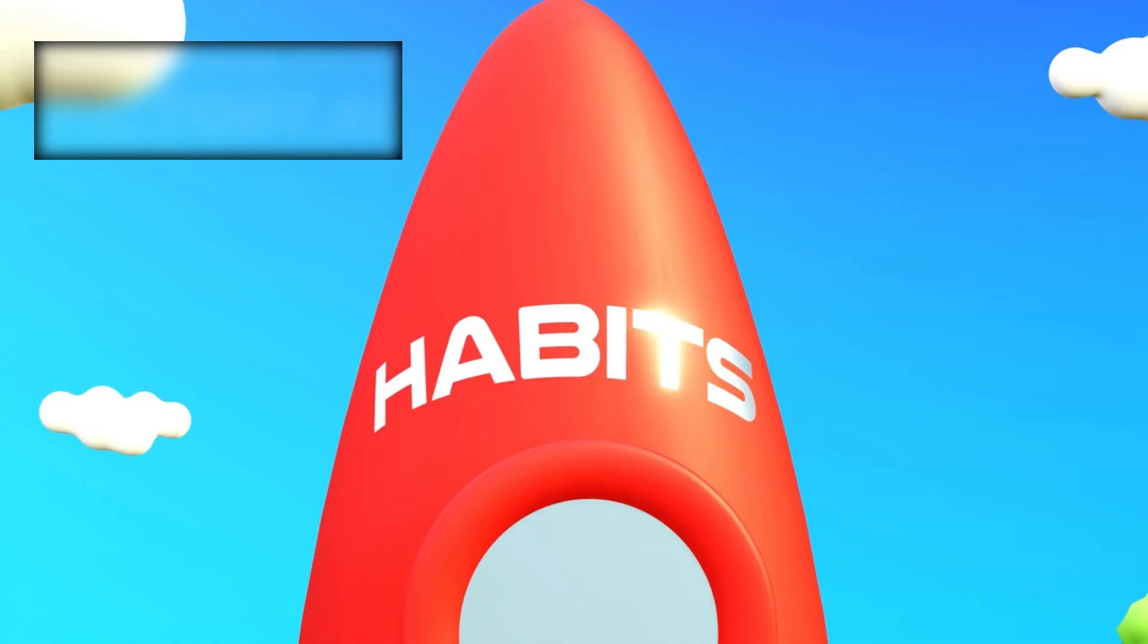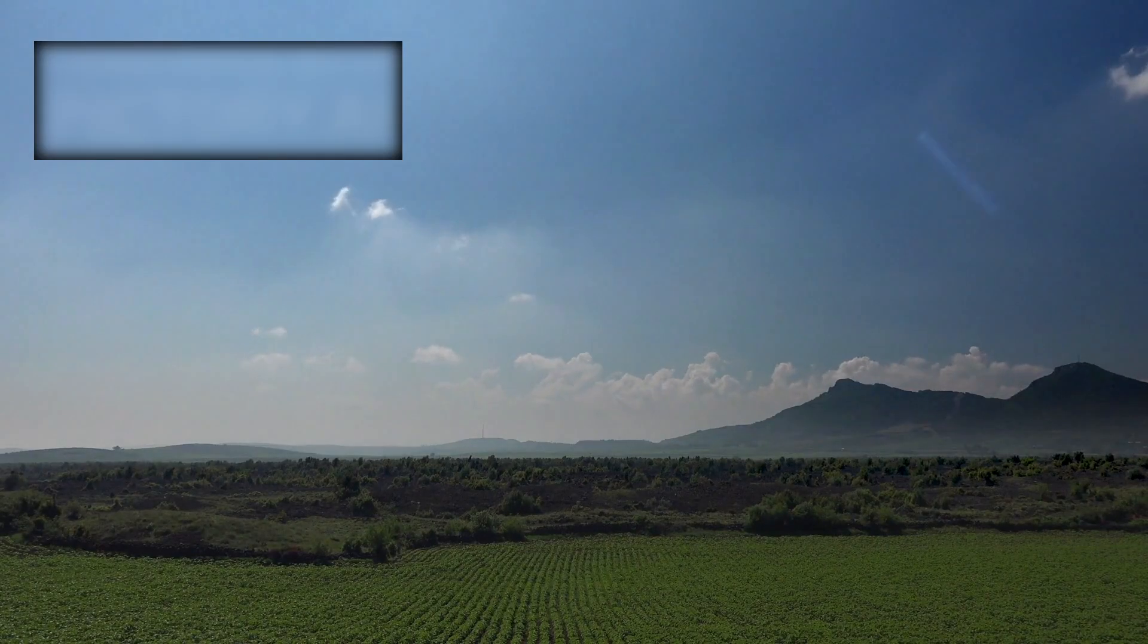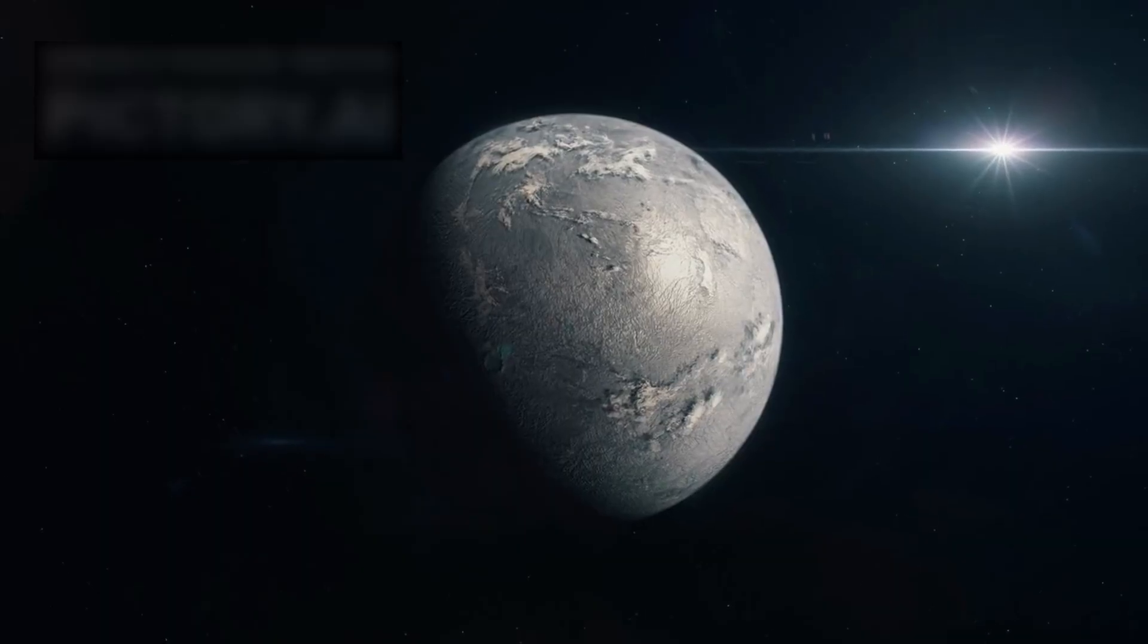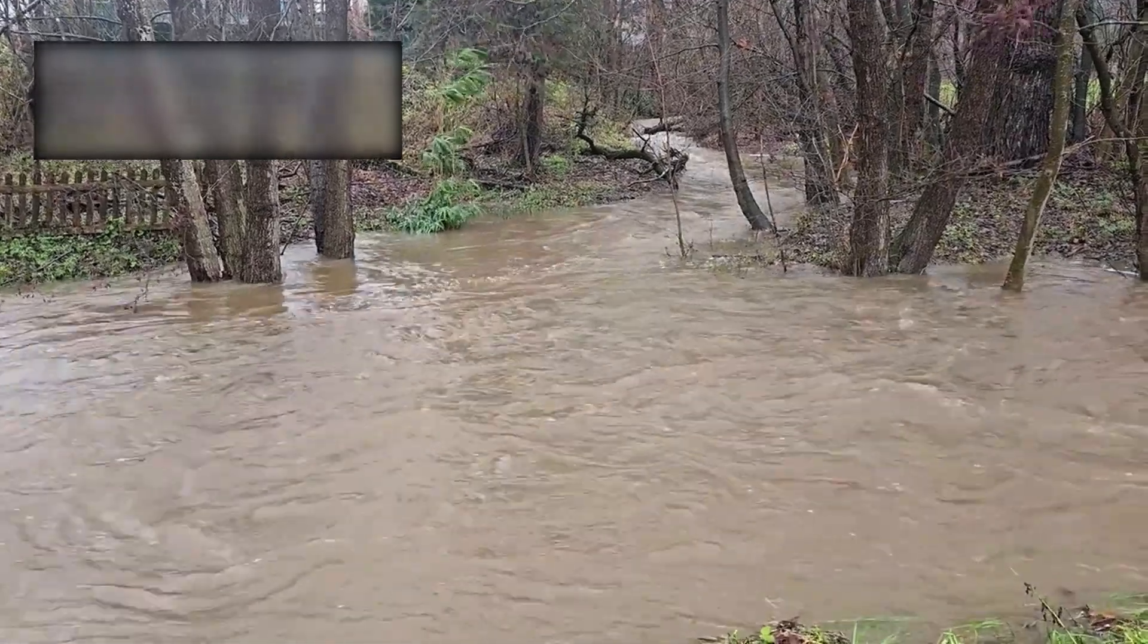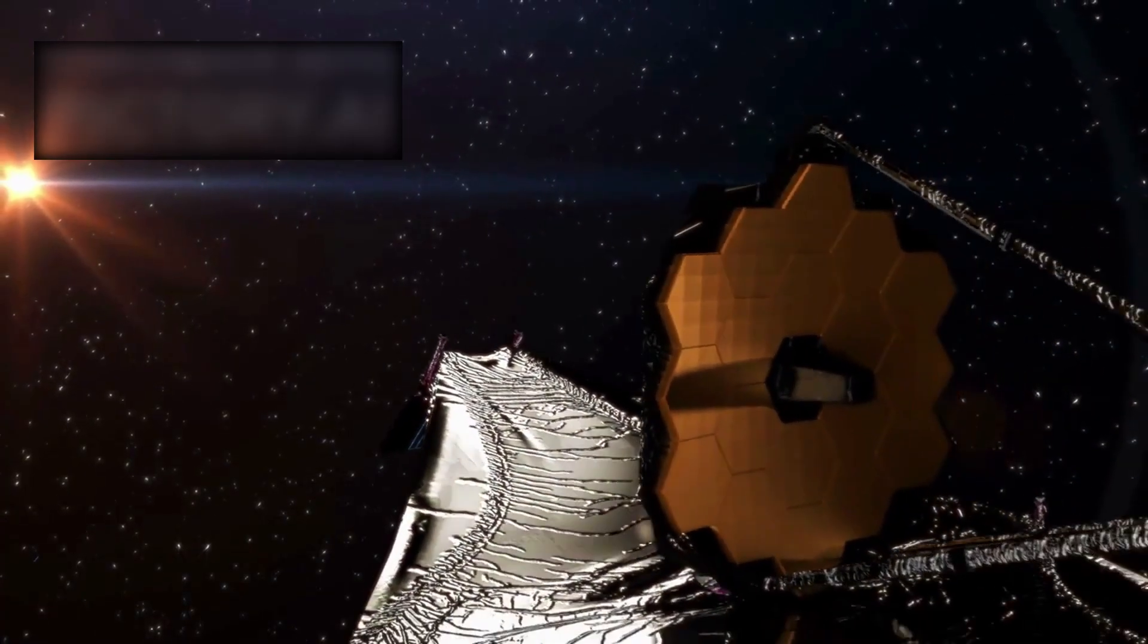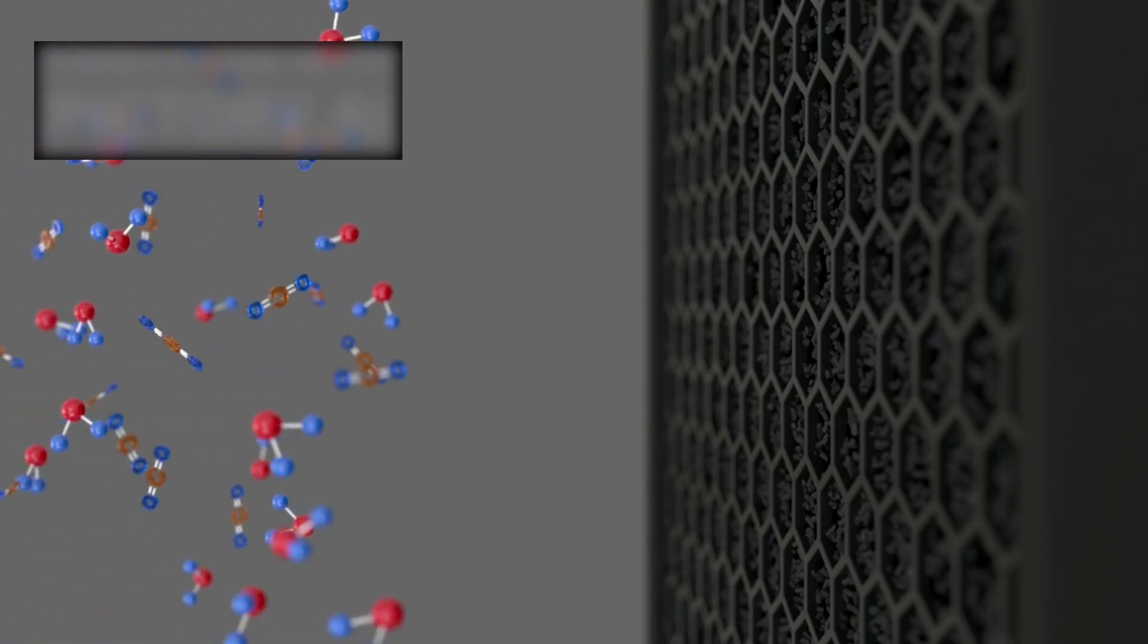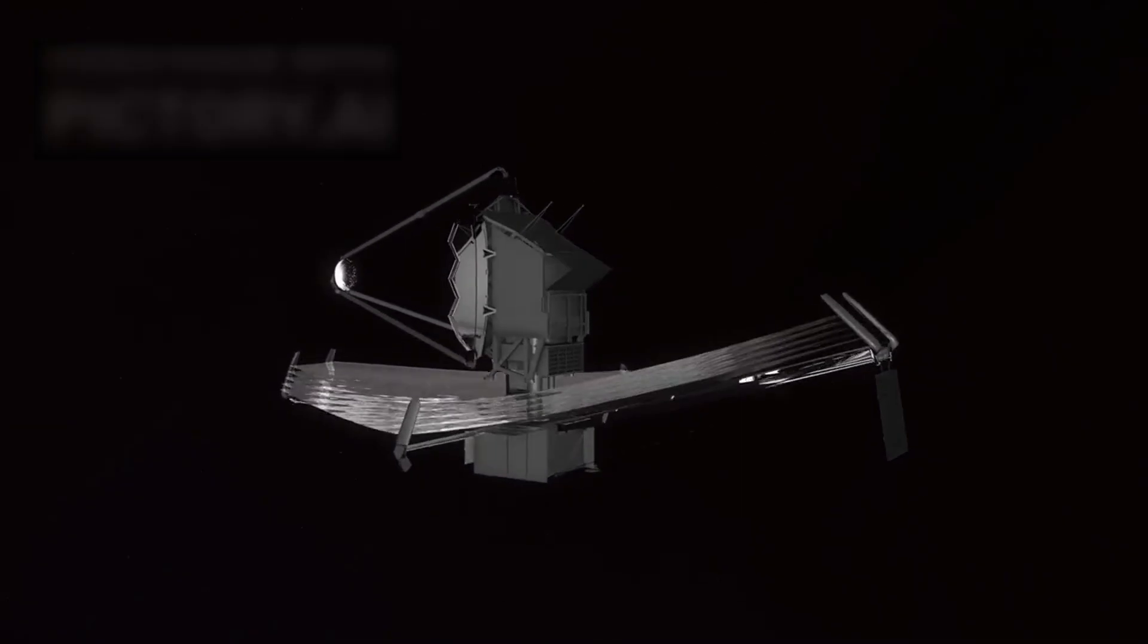And what did JWST uncover? The faint fingerprints of water vapor in its atmosphere. This discovery electrified the scientific world. For the first time, a sub-Neptune in the habitable zone revealed evidence of one of life's most essential ingredients. But the revelations did not stop there. JWST also detected methane and carbon dioxide, gases familiar to us, gases that help stabilize climates and sustain planetary atmospheres.